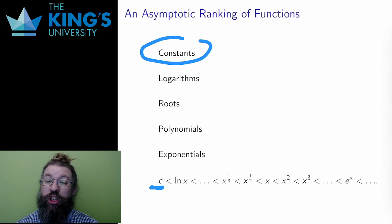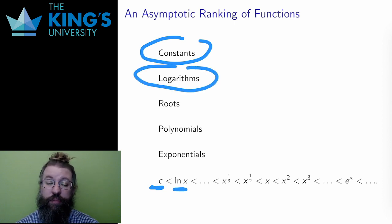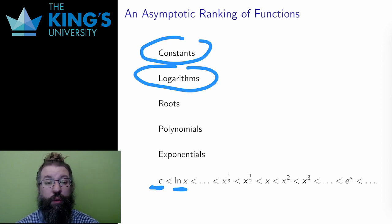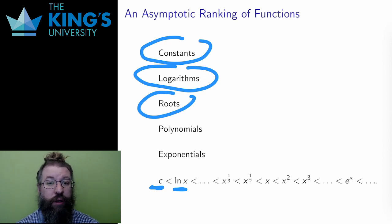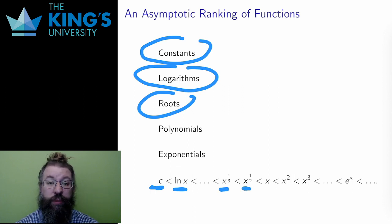The slowest of the commonly used functions that do grow is the logarithm. For the most part, I can think of the logarithm as the thing that grows slower than any other growth function. Faster than the logarithm are the roots — the square root, the cube root, the fourth root, etc. The higher the degree of the root, the slower it grows, so the square root has a higher asymptotic order than a cube root, and so on.